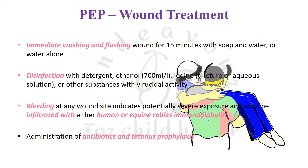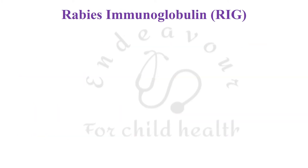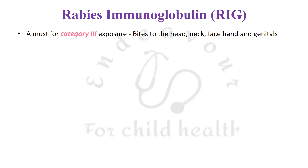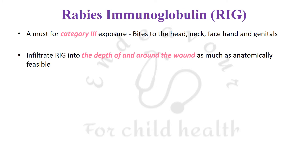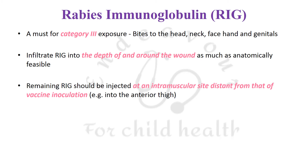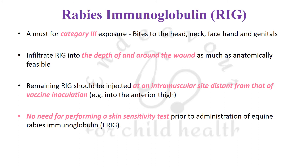Rabies immunoglobulin is a must for category three exposure, especially bites to the head, neck, face, and genitals. The RIG should be infiltrated into the depth and around the wound as much as anatomically feasible. The remaining rabies immunoglobulin should be injected at an intramuscular site distant from the vaccine administration site. There is no need to perform a routine skin sensitivity test prior to administration of equine rabies immunoglobulin.